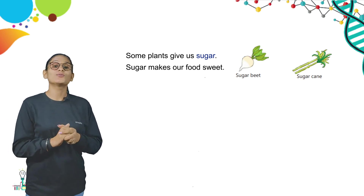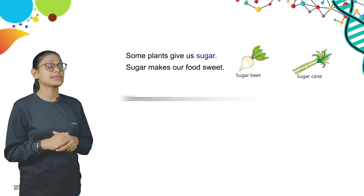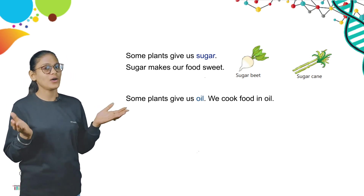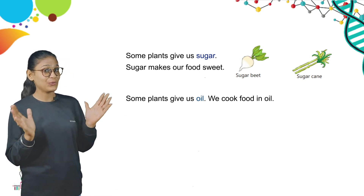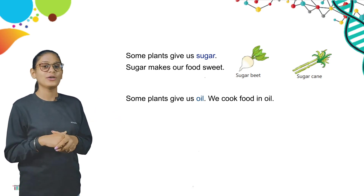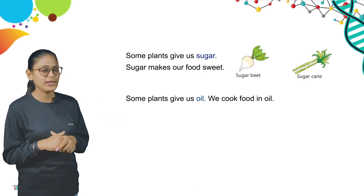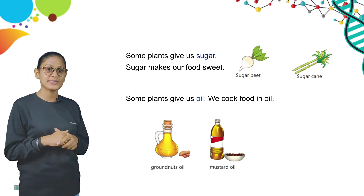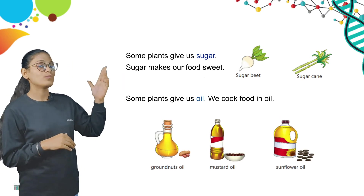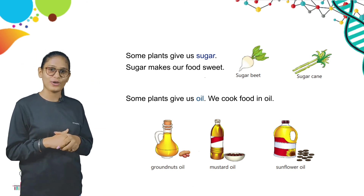Now we discuss about oil. Some plants give us oil. We cook food in oil. Here are some examples of oil — look at the pictures. The first is groundnut oil, the second is mustard oil, and the third one is sunflower oil.